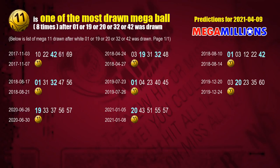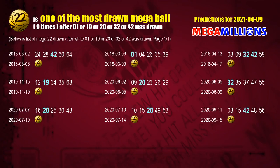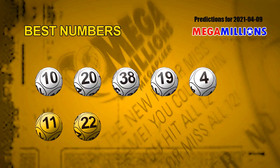After getting following ones, we can use following number statistics to find out following mega ball numbers too. The first mega ball most drawn after 01, 19, 20, 32, or 42 was drawn is mega ball 22 — we list these eight draw results. The second mega ball most drawn in the same conditions is also mega ball 22, based on nine draw results. Now we have the most frequently following white ball units digits and mega ball numbers. The best five white balls for the next draw are 10, 20, 38, 19, 04, and the best two mega balls are 11 and 22.